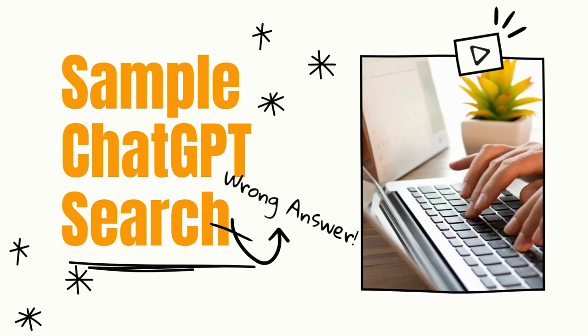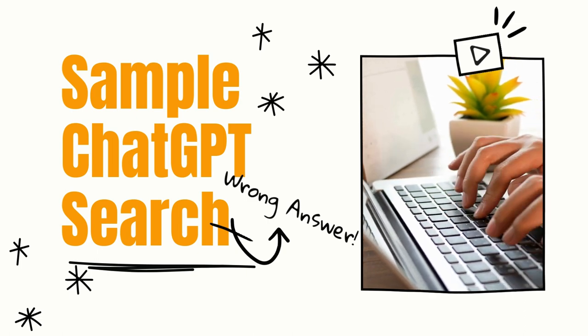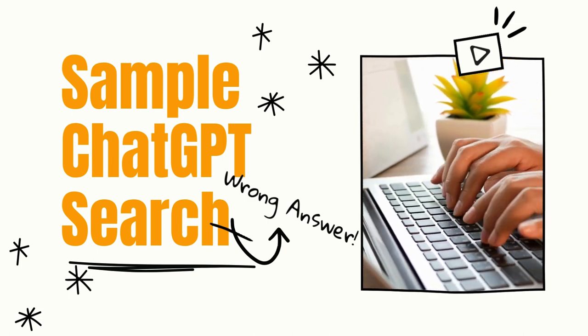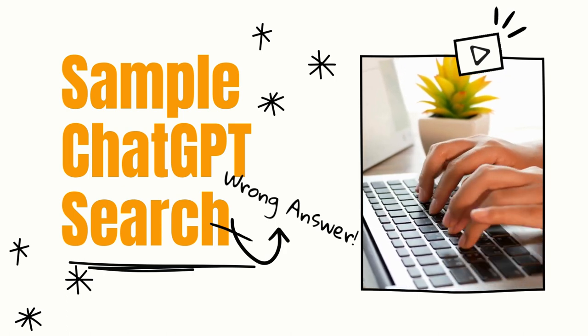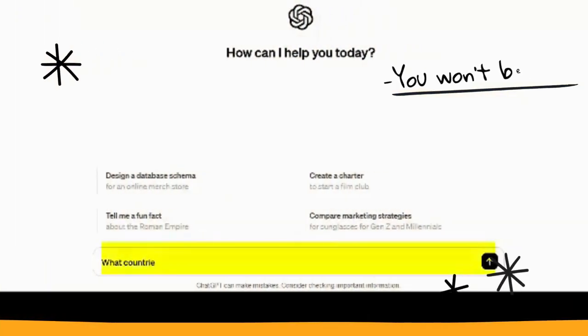Let's look at a sample ChatGPT search with the wrong answer. We're going to put our prompt in. Our prompt is: what countries